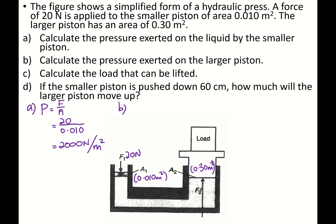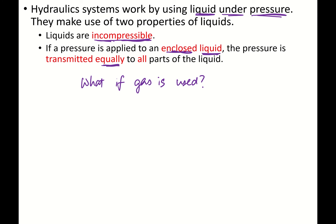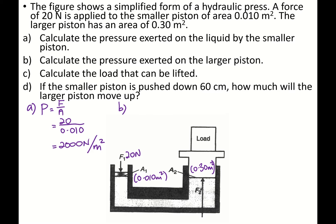Calculate the pressure exerted on the larger piston. Now you learned earlier on the second line: if the pressure is applied to an enclosed liquid, the pressure is transmitted equally to all parts of the liquid. So the pressure is transmitted from the small piston. So that means the pressure on the larger piston has to be 2,000 N per m², because pressure is transmitted equally to all parts of the liquid.